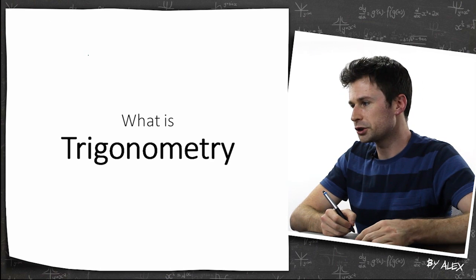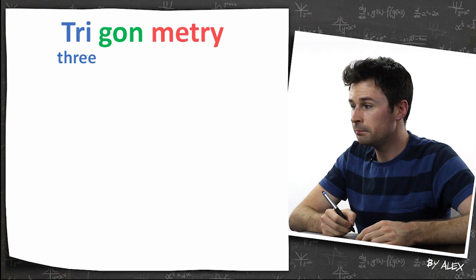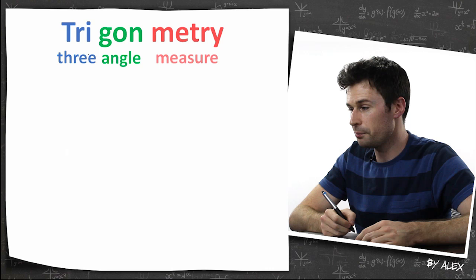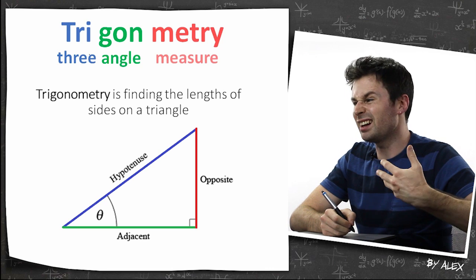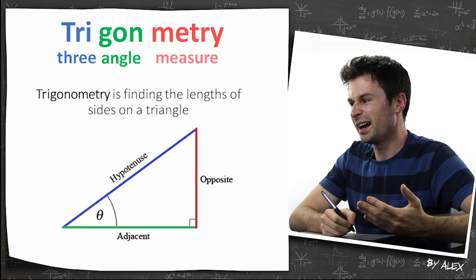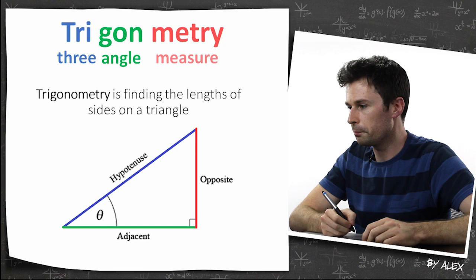So what is trigonometry? Tri means three, gon means angle, and metri means measure. So it's finding the length of the sides of a triangle, basically, if you want to make it simple.